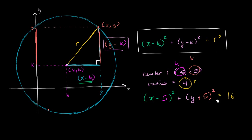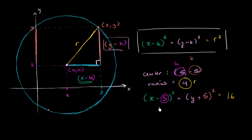On the other hand, if someone gave you this as the equation of a circle, you know the center is going to be at x equals 5 and y equals negative 5 — another way to think about it is: what x and y values make each term equal to zero? If x equals 5, the first term is zero; if y equals negative 5, the second term is zero. And if you had a circle centered at the origin, at zero, then you're just going to have x squared plus y squared equals the radius squared.